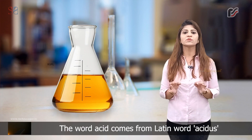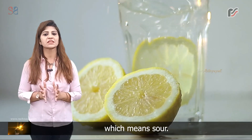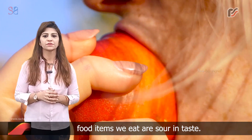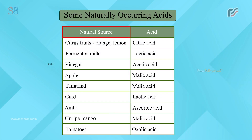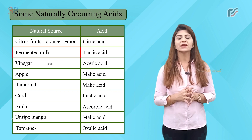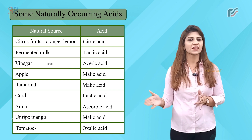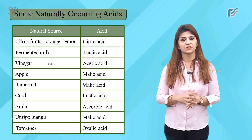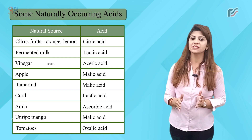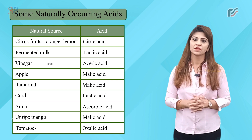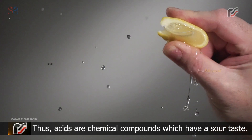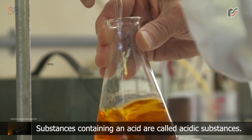The word acid comes from the Latin word 'acidus' which means sour. A number of fruits and some common food items we eat are sour in taste. Some naturally occurring acids and their sources: citrus fruits (orange, lemon) — citric acid; fermented milk — lactic acid; vinegar — acetic acid; apple — malic acid; tamarind — malic acid; curd — lactic acid; amla — ascorbic acid; unripe mango — malic acid; tomatoes — oxalic acid. Thus, acids are chemical compounds which have a sour taste. Substances containing an acid are called acidic substances.